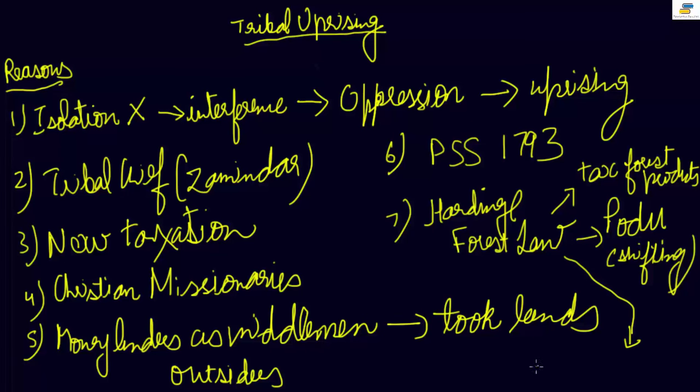Britishers abolished human sacrifice. Although it is a good thing, tribals thought that this is against their culture and wishes. This was done by the Khonds from Orissa and Gonds from Madhya Pradesh. These two groups were very angry.